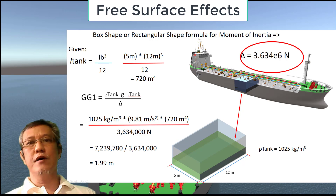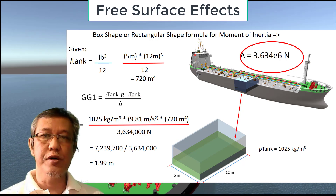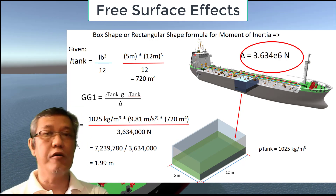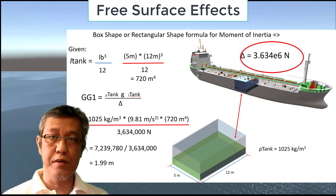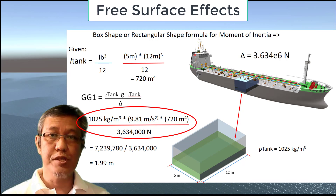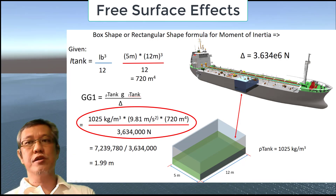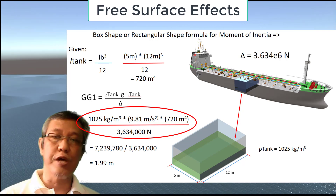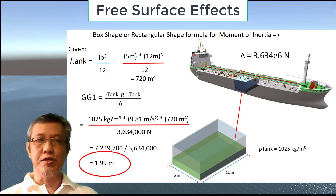Now we follow with the formula given, which is density times gravitational acceleration times the inertia of the tank — 1025 kg per cubic meter times 9.81 meters per second squared times 720 meters to the fourth, divided by 3,634,000. And thus we have a value of 1.99 meters.